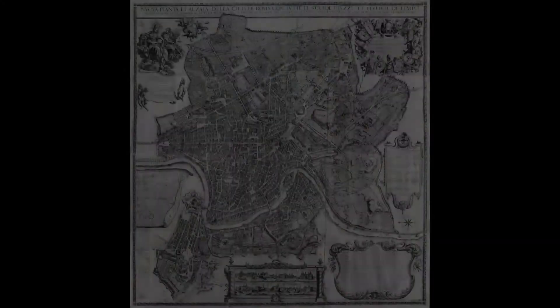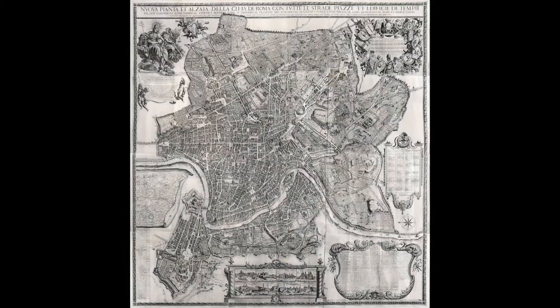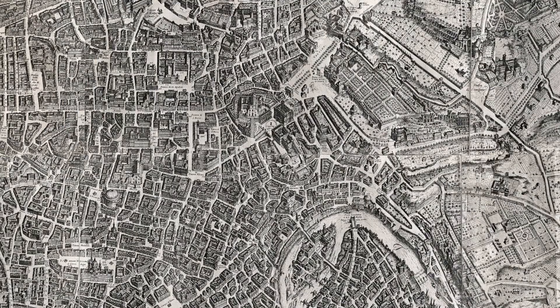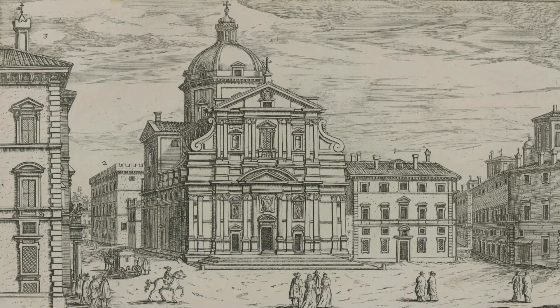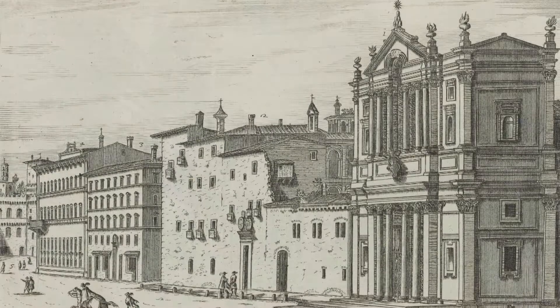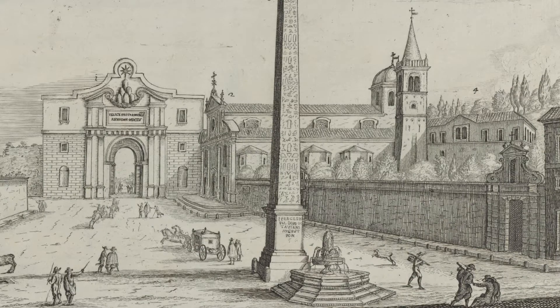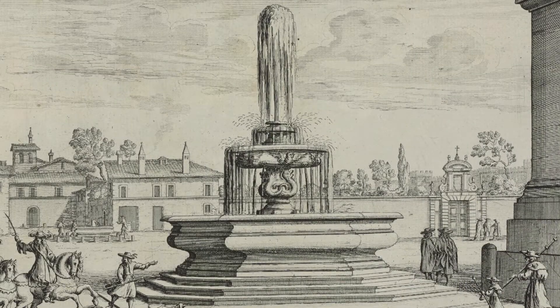This project began with Falda's incredible map of 1676, which is beloved of architectural historians who work on the 17th century because of the incredible detail it shows. Falda, though he died very young, produced 300 plates showing perspectival views of various piazzas, churches, and fountains in the city. So you have an incredible concentration of material produced by a single man in a span of about 19 years.